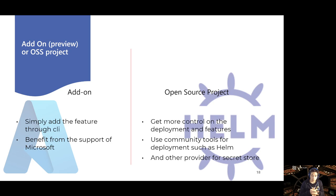We have two ways of installing the Secret Store provider. First, a simple CLI configuration as an AKS add-on — easy, benefits from Microsoft support, but less customization. Second, installing it as an open source project using Helm, which gives more control. We'll demonstrate both.